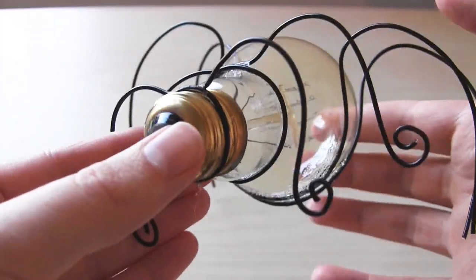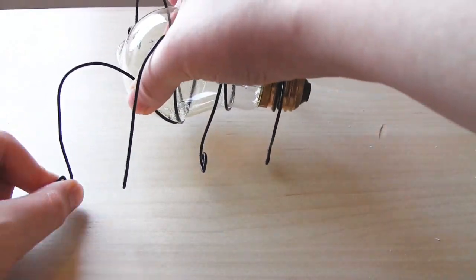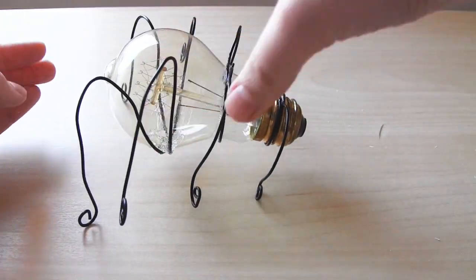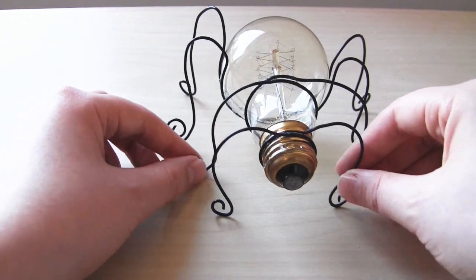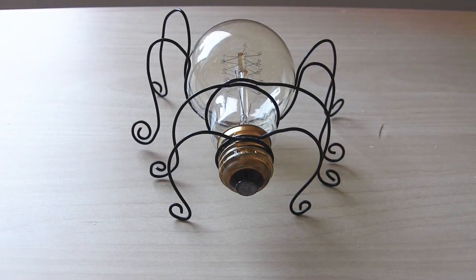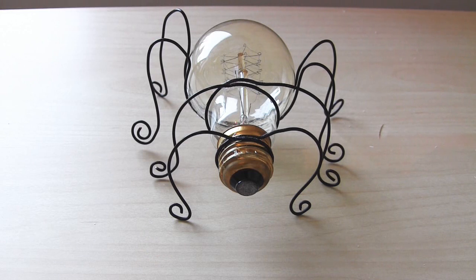With the third and fourth pairs of legs in particular, it's important that you use enough wire. Because these pieces of wire are wrapping around the larger diameter of light bulb, they will need to be a bit longer. In all instances, it's better to overestimate the wire you're going to need.